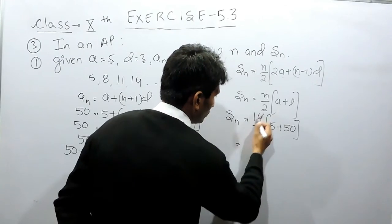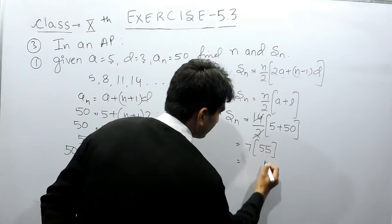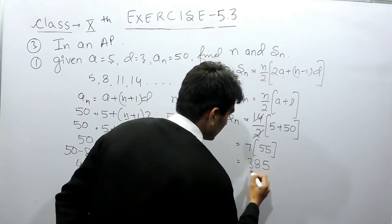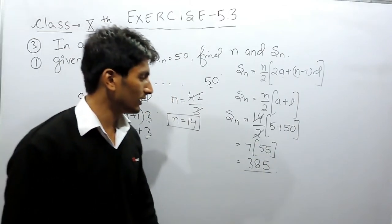So this will be equal to 7 and this is 55. So this is 7 times 35, and 7 times 35 plus 3 is 38. So the sum of this AP must be equal to 385.